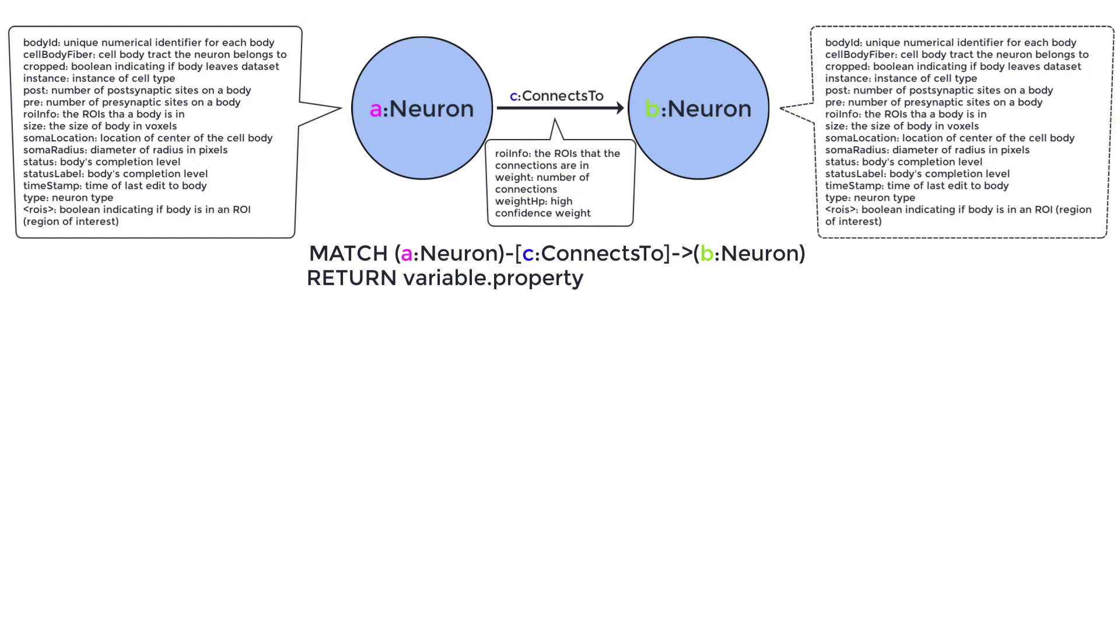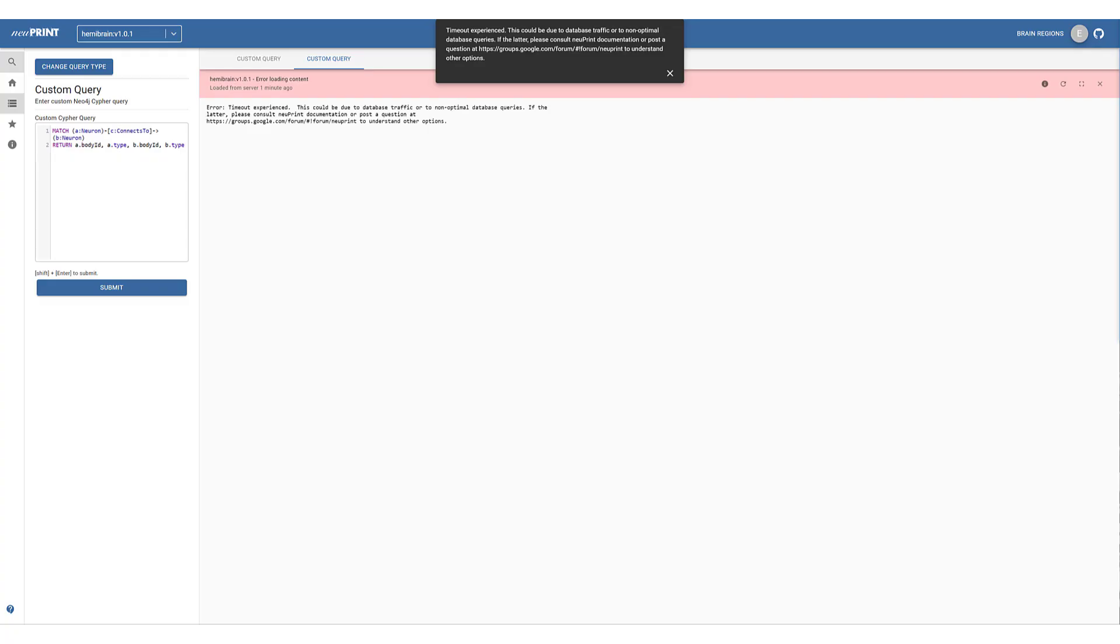Now we can return information such as the neuron type and body ID of each neuron A and each neuron B. While this alone is technically a complete custom query, this is a huge query. You are telling it to look and report on all instances of one neuron is presynaptic to another. Running this query on a large dataset such as the hemibrain will force NewPrint to look at and return nearly 70 million relationships. Not only would this return too much information to be of much use, but this query would likely time out the server or freeze your browser. We will have to narrow down what we are looking for in order to actually get results.